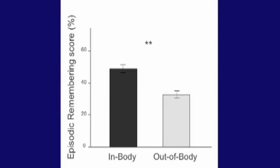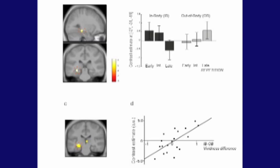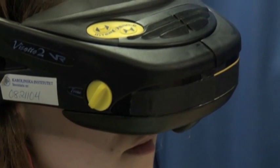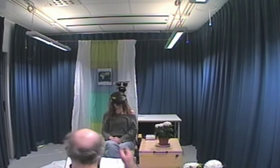The results show that the participants were unable to recollect vividly the events encoded from out-of-body. fMRI analysis shows this experimental amnesia affects specifically the hippocampus. This is what we call the out-of-body induced hippocampal amnesia.